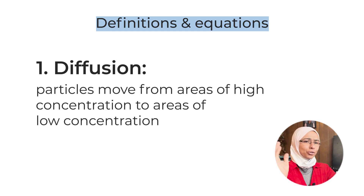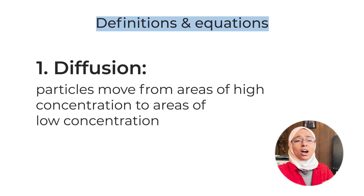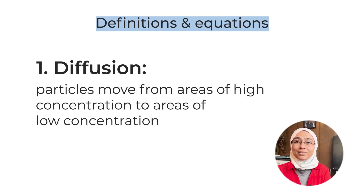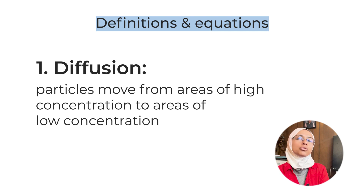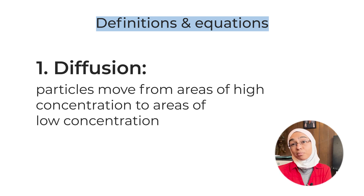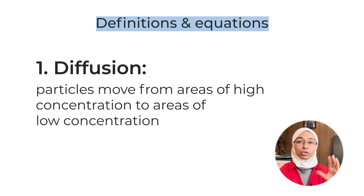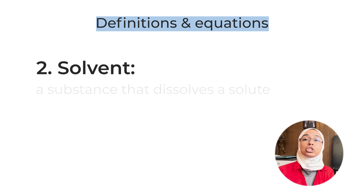Definition number one is diffusion — a very easy one. Particles move randomly from areas of high concentration to areas of low concentration until they are evenly distributed. This is usually asked in a written format, because the multiple choice format will usually ask about the effect of temperature and the effect of mass on diffusion. So the definition of diffusion is more likely to be a straightforward written question.